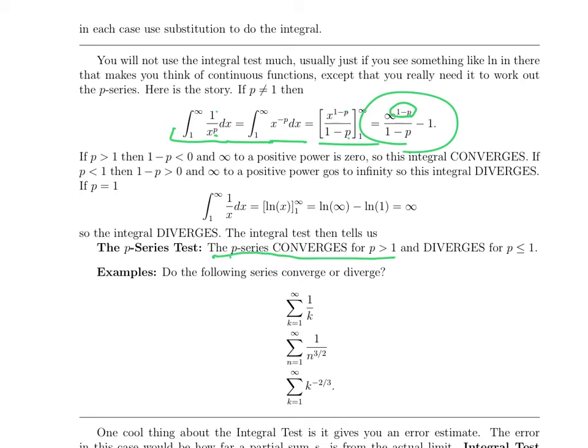So when p is greater than 1, the p series converges. If p is less than 1, this integral is infinity to a positive power, because 1 minus p is positive. Infinity to a positive power is infinity, and it diverges.